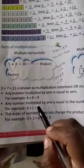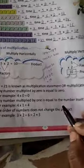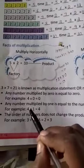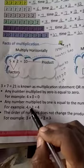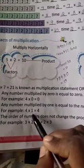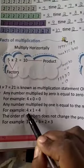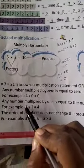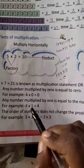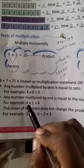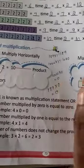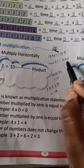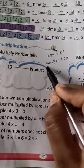Any number multiplied by 1 is equal to the number itself. For example, 4 into 1 is equal to 4. When we multiply any number by 1, we get the same number. For instance, 189 into 1 is equal to 189, and 1000 into 1 is equal to 1000.